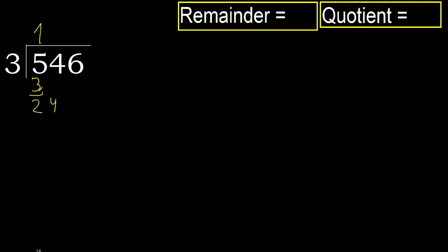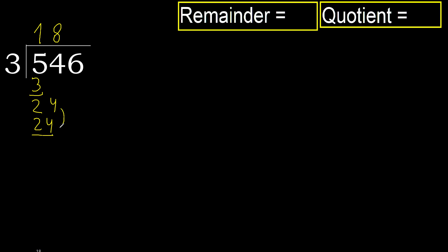Next, bring down: 24. 3 multiplied by 9 is 27 — that is greater. Multiply by 8: 24 is not greater, ok. Subtract: 24 minus 24 equals 0.